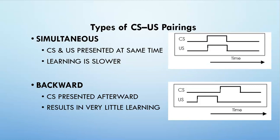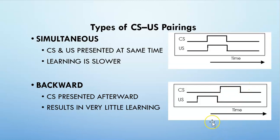The final type of CS-US pairing is called backwards — like forward short delay but reversed. We present the US first, like the food, and then once the food is taken away we turn on the conditioned stimulus. So you have the US and get the response, then when the US is done you turn on the conditioned stimulus. Can this work? Sure, but it doesn't work very well — this is the least productive way of learning and results in very little learning. It's not the optimal presentation of pairings.